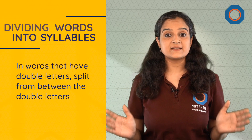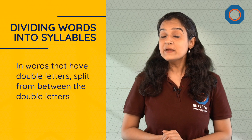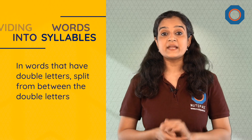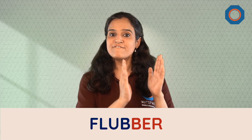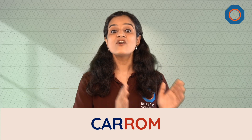In case there are words where a letter is repeating, then in order to find out how many syllables are there in that word, you split the word from the two letters. Let's take a few examples to understand: butter (but-ter), flubber (flub-ber), carom (car-om).